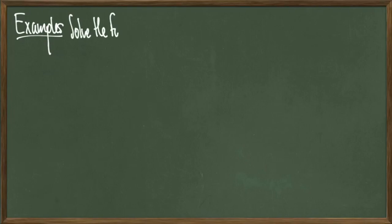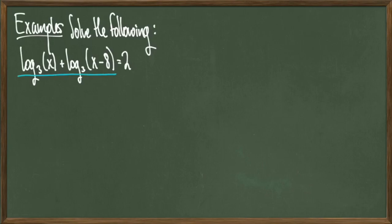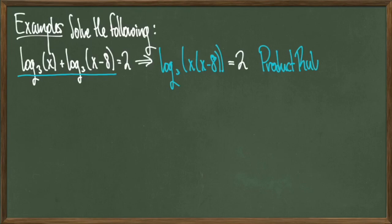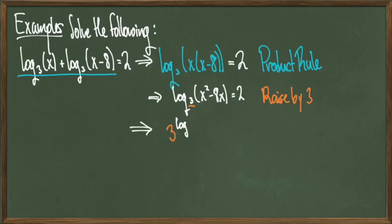In our next example we'll solve log₃(x) + log₃(x-8) = 2. We'll use the product rule to simplify the left hand side to log₃(x(x-8)) = 2. We'll simplify the inside to get log₃(x² - 8x) = 2. And now we'll lift both sides by 3 because we're dealing with log base 3.